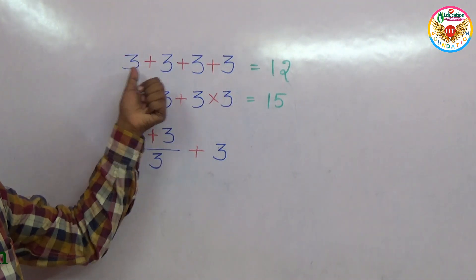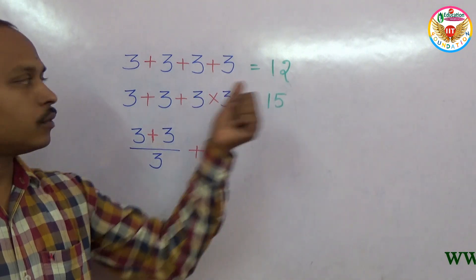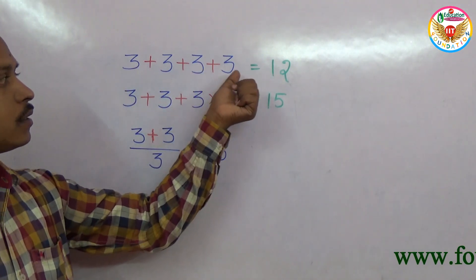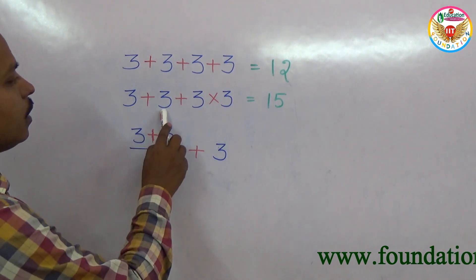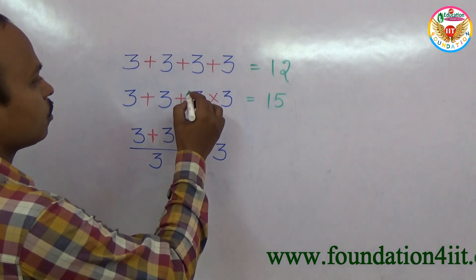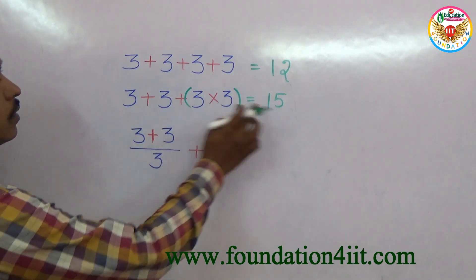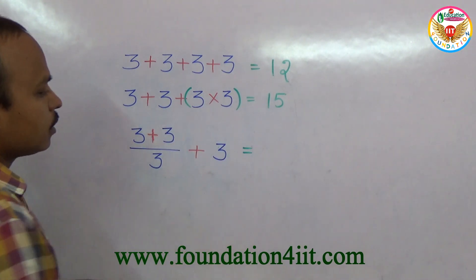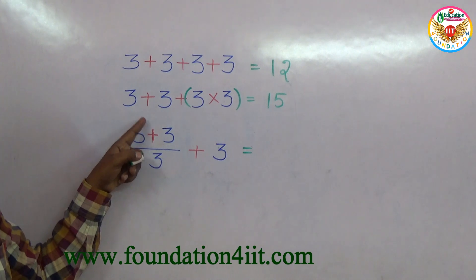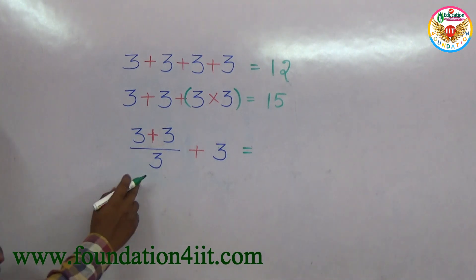With four threes I made equal to 12, so 3+3+3+3 equals 12. Now same, 3+3+3×3, if it is closed 3×3 is 9, 9+3+3 is 15. And this one is 3+3 is 6, 6÷3 is 2, and 2+3 is equal to 5.